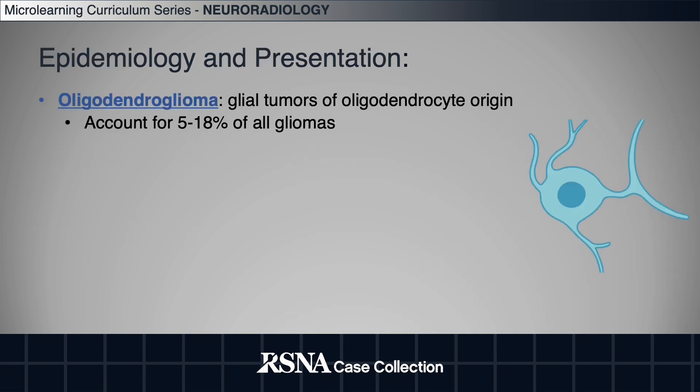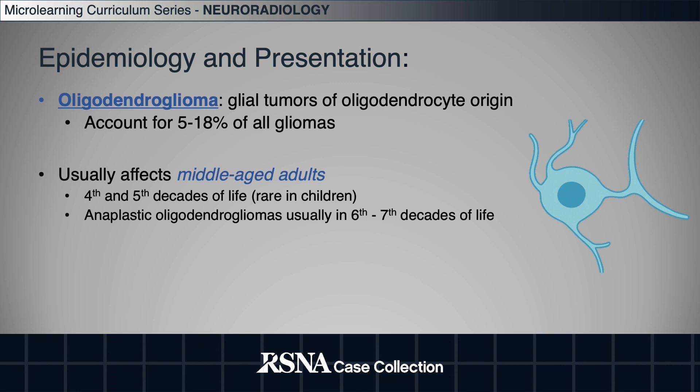Oligos are glial tumors of oligodendrocyte origin. Remember that oligodendrocytes are the myelinating cells of the CNS, and these tumors can account for about 5% to 18% of all gliomas. They're usually seen in middle-aged adults in their 30s and 40s, and can be seen in younger adults, but rarely in children.